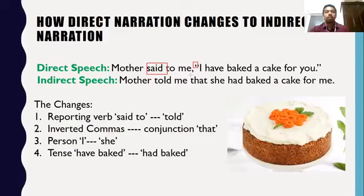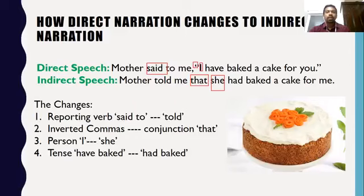Instead of inverted comma, we have put conjunction 'that.' The pronoun has been changed — 'I' has become 'she.' The tense has also been changed: 'have baked,' which is in present perfect tense, has changed into past perfect — 'had baked.'